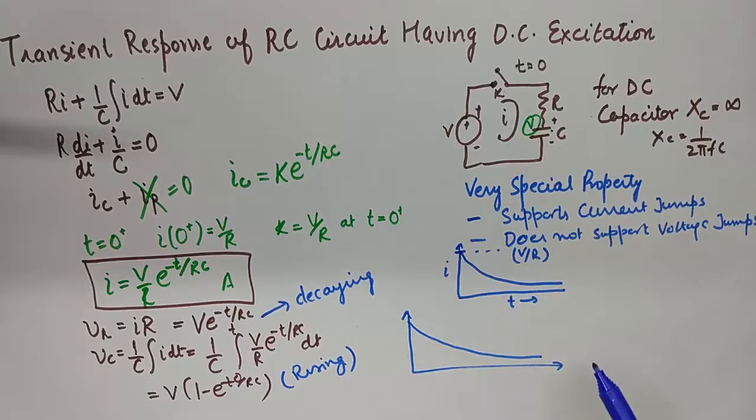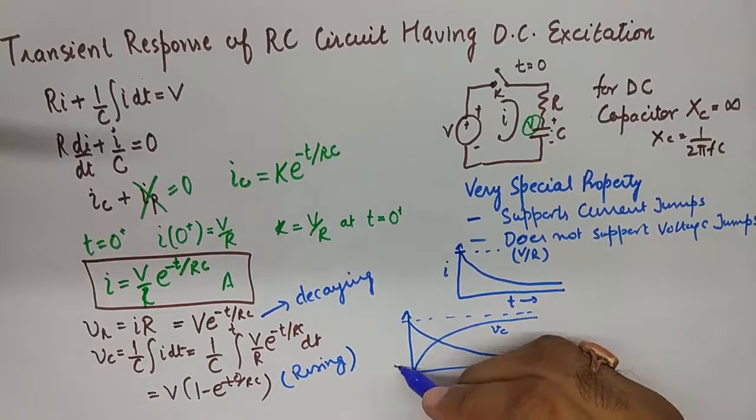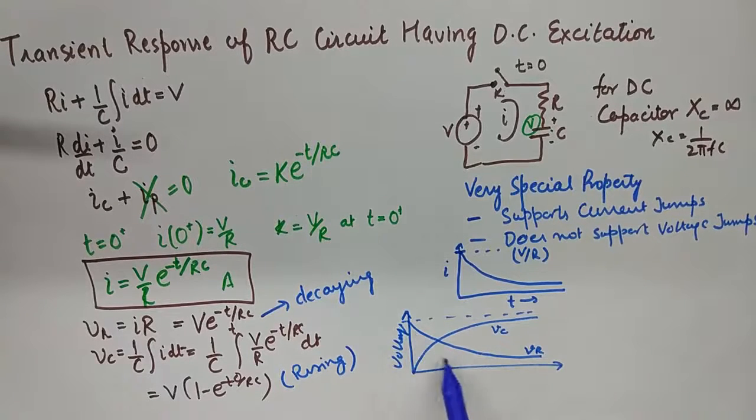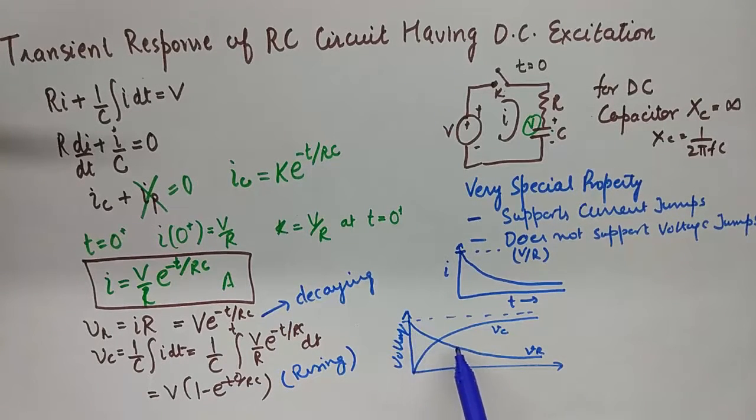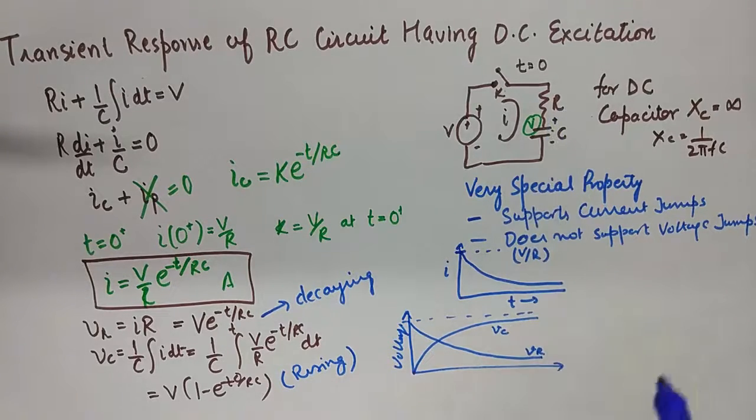So if we were to draw the profiles of VR and VC in RC charging circuits that will be like this. This is VR, you can see the voltage is dropping across resistor because finally the voltage across resistor will become zero because no current is flowing.